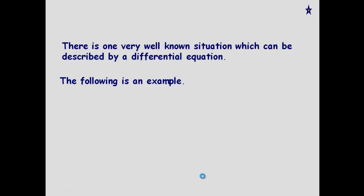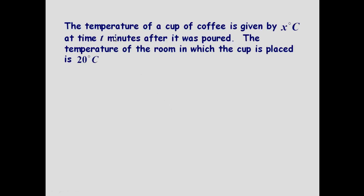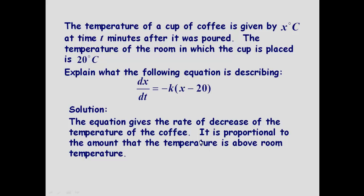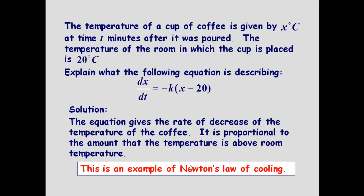So we'll go through this type of problem. This is typical. Temperature of a cup of coffee is given in degrees Celsius at time t minutes after it was poured. The temperature of the room in which the cup is placed is 20 degrees C. So we model this like this. It's decreasing proportionally. But because the room temperature is 20, we get this x minus 20. So you can see here in words, it's proportional to the amount that the temperature is above room temperature. And it's an example of Newton's law of cooling.